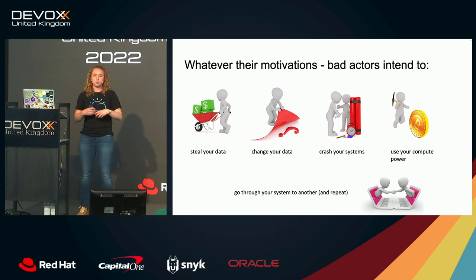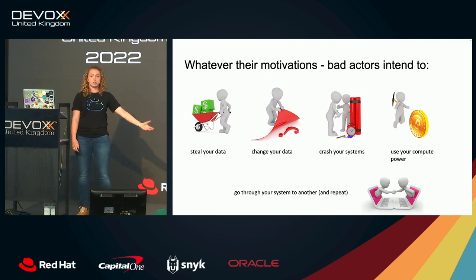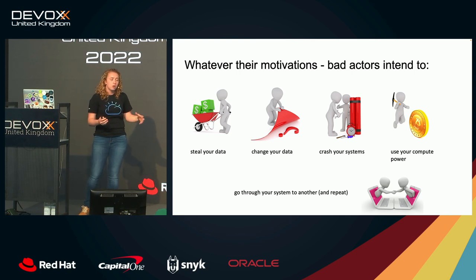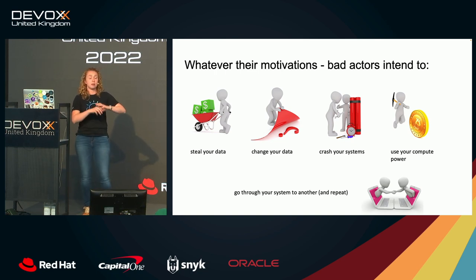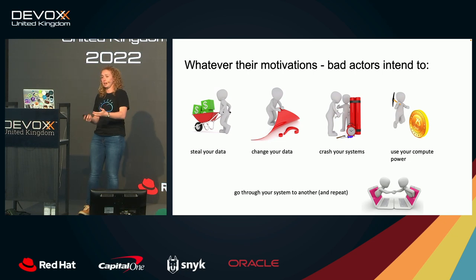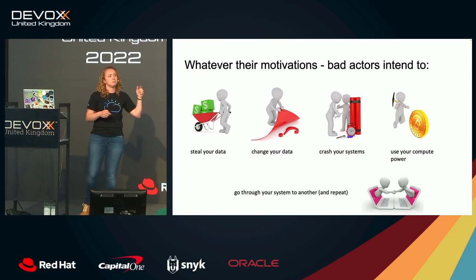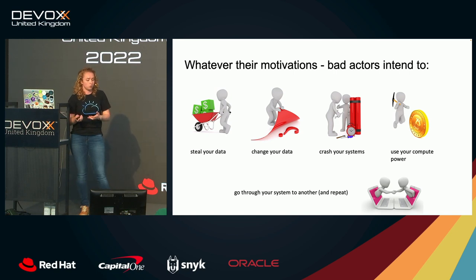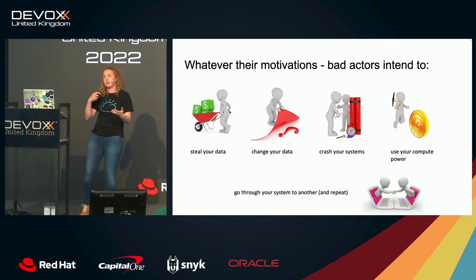Another motivation is not just to use you, but to go through you to get to another system — either to spread further by lying dormant and activating all at once for a massive impact, or because you're connected to another system that has something they actually want. All of these are the motivations bad actors have when creating attacks and trying to get into your system.